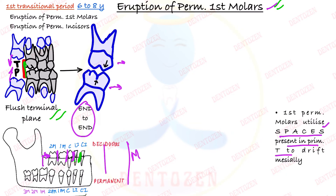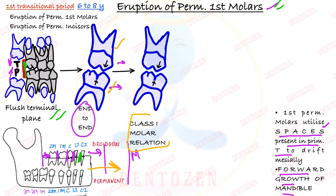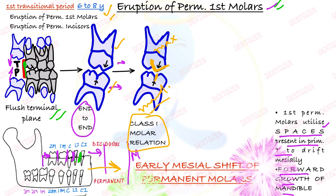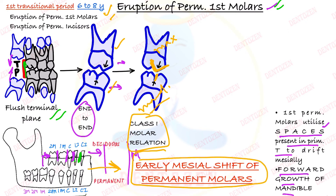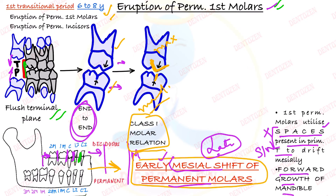The molars move mesially by using spaces in the primary dentition and with the forward growth of the mandible, more space becomes available. When these two molars move mesially and come into class 1 molar relationship — that is, the mesial buccal cusp of the maxillary first molar is in line with the mesial buccal groove of the mandibular first molar — this mesial shift happening in the early transitional period is called the early mesial shift of permanent molars. This is a very important short note. If physiological spaces are not present, molars remain in end-to-end relationship until the late transitional period.